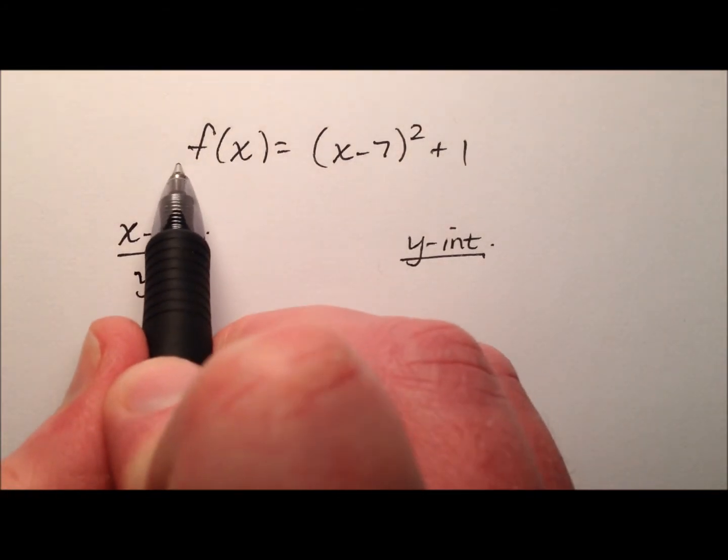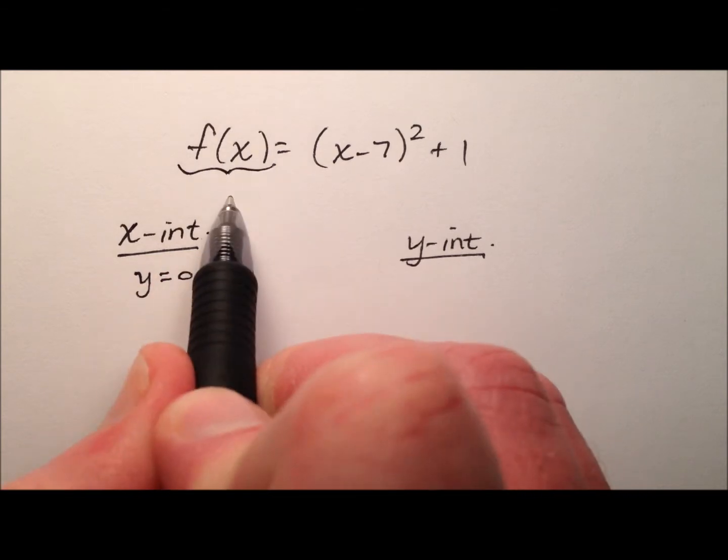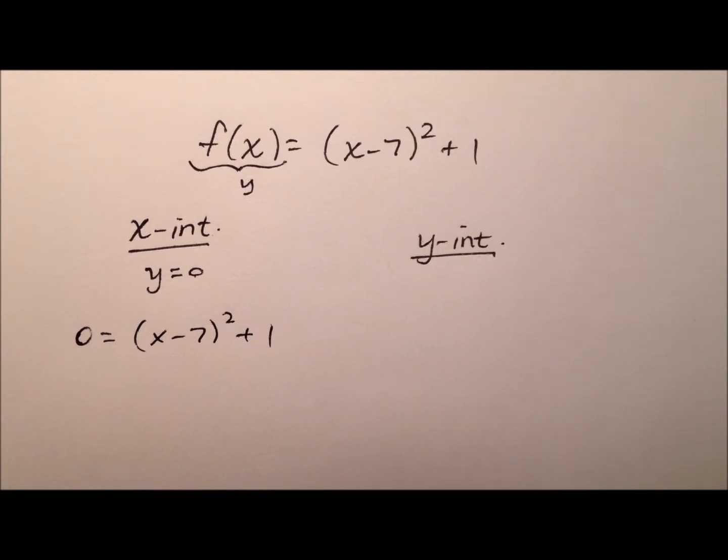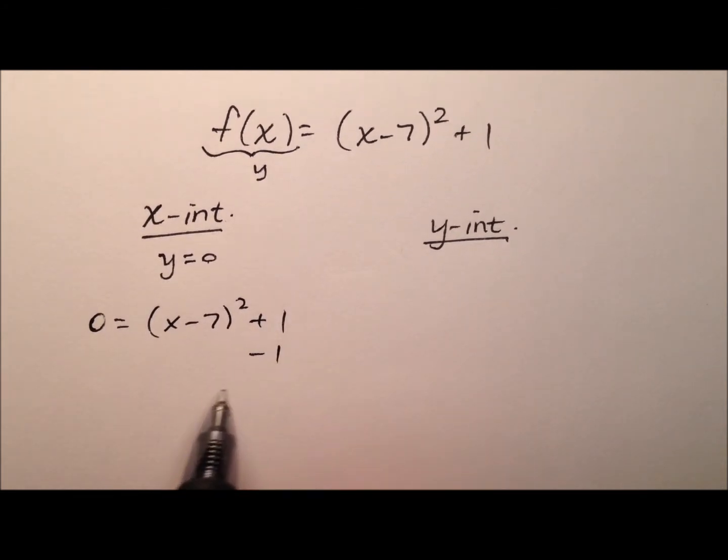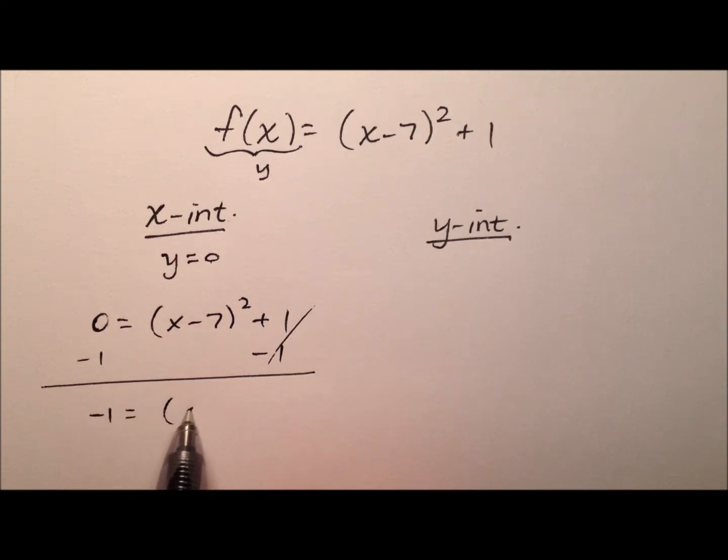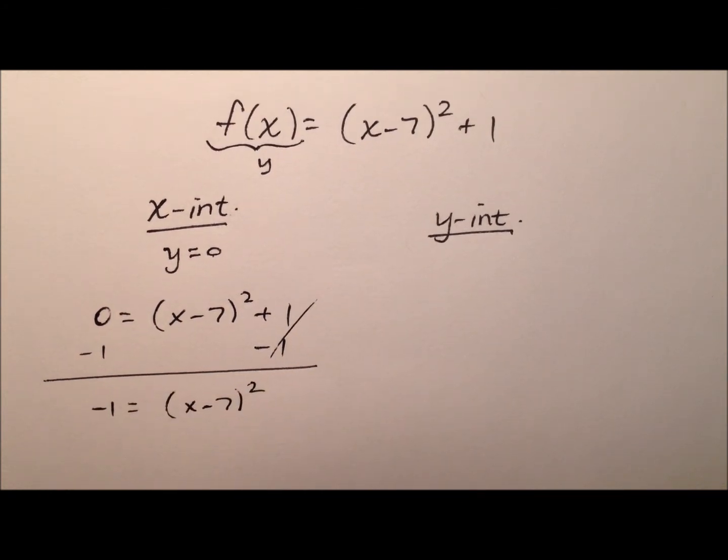When this is written in function notation, we know we can exchange this f(x) for our y, which then we're going to plug in 0 for. So 0 equals x minus 7 quantity squared plus 1. We can solve this. We'll start by subtracting 1 from both sides, and we'll have negative 1 equals that perfect square business.